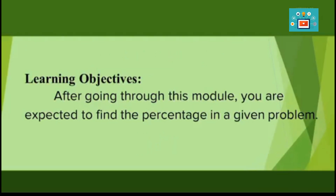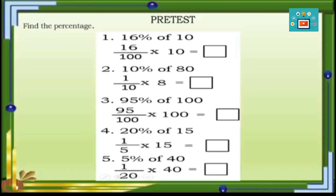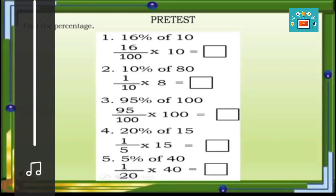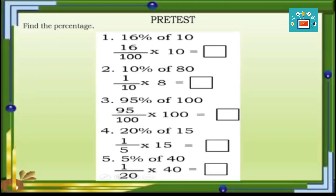As we usually do, we are going to have the previous lesson review first. Find the percentage. Number one: 16% of 10. We are going to rename 16% into a fraction, and that is 16 hundredths times 10. Number two: 10% of 80 — renaming percent into fraction, 10% becomes one-tenth, and one-tenth times 80 equals 8. Number three: 95% of 100, that's 95 hundredths times 100.